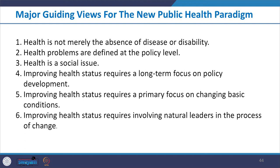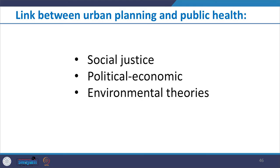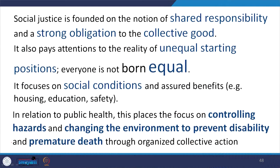When the pendulum shifted back towards a more social model in public health, three viewpoints helped show the link between urban planning and public health: social justice, the political economic model, and environmental theories. Social justice is founded on the notion of shared responsibility and a strong obligation to collective good. It pays attention to the reality of unequal starting positions — everyone is not born equal. It focuses on social conditions and assured benefits such as housing, education and safety. In relation to public health, this places focus on controlling hazards and changing the environment to prevent disability and premature death through organized collective action.